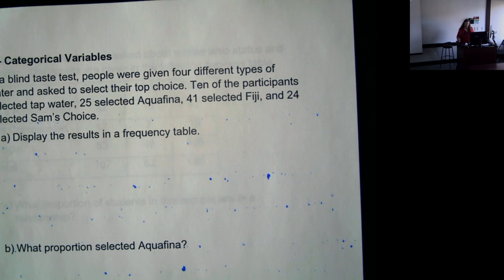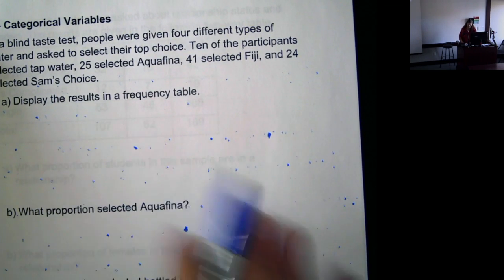Okay, now we're going to look a little bit about categorical variables. So we have a blind taste test. People were given four different types of water and asked to select their top choice.